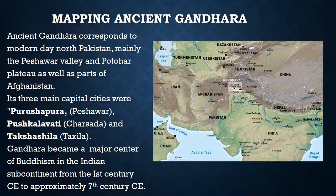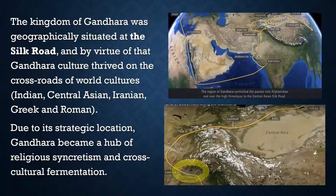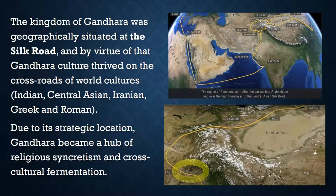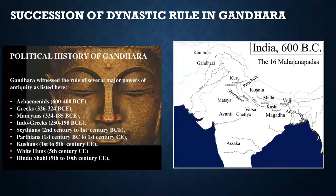Gandhara became a major center of Buddhism in the Indian subcontinent, especially from the first century to approximately the seventh century CE. The kingdom of Gandhara became so important because it stood at the crossroads of civilizations — it was a hub on the Silk Route. As a result, there was a fusion of European, Central Asian, and Indian world cultures, which produced the marvel of Gandhara and its religious syncretism and cross-cultural fermentation.